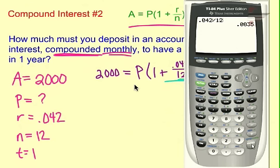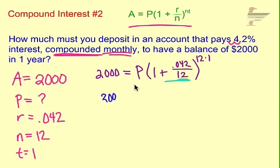And then we can go ahead and just add 1 to that now. So we have 1.0035. So in our problem, 2,000 equals P times 1.0035 raised to the 12 times 1 is just 12th power.